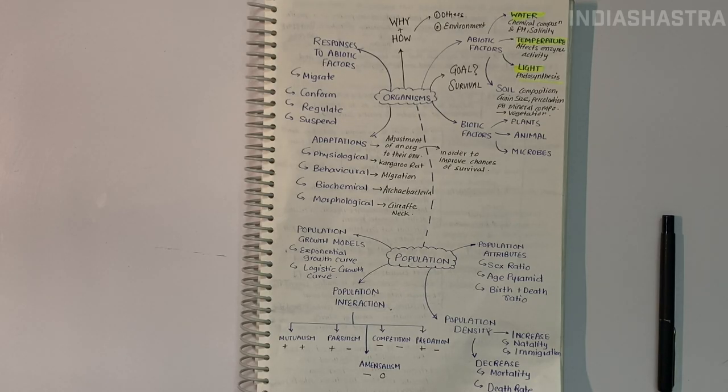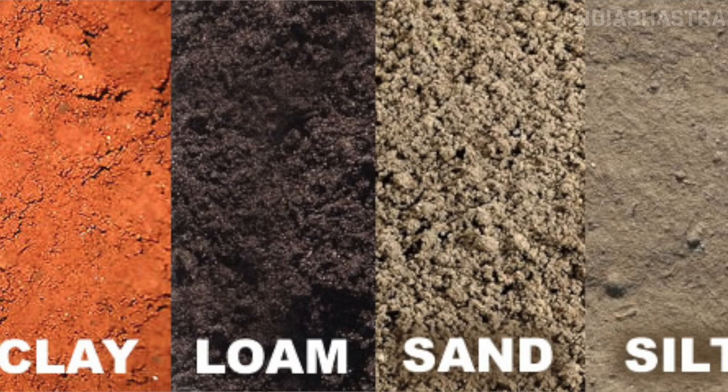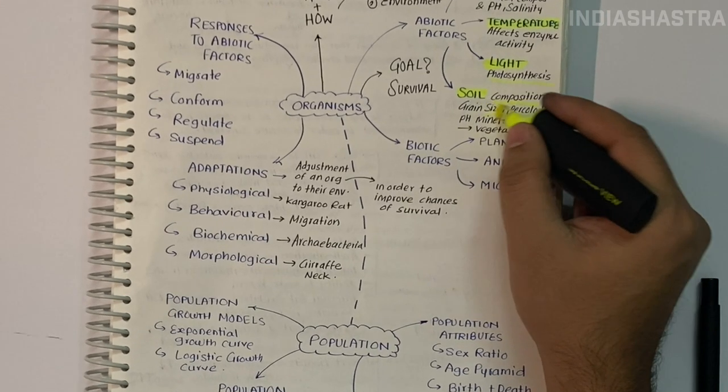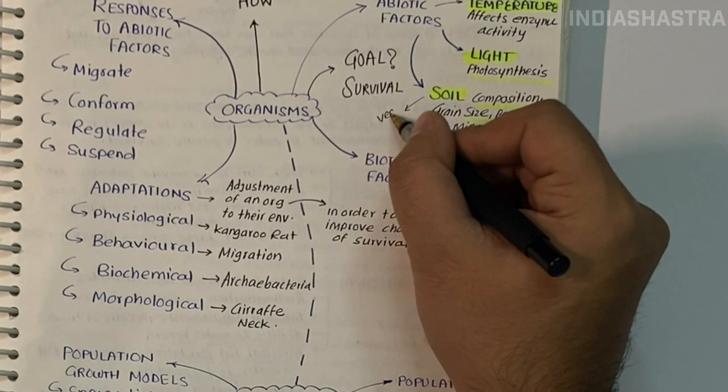Some organisms feed on dead animal carcasses that sink deep, while some feed on chemicals from deep sea vents. The next factor is soil. Variation in soils depends on climate, weathering process, whether soil is transported or sedimentary, and soil development. Soil composition, grain size and aggregation determine percolation and water holding capacity.